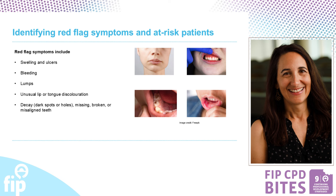Bleeding is the first stage of periodontal or gum disease and can eventually lead to breakdown of periodontal structures and mobility of the teeth. Any lumps or unusual lip or tongue discolorations or spots should be referred. Large cavitations, caries, dark spots, or holes; and any missing, broken, or misaligned teeth are also red flags.